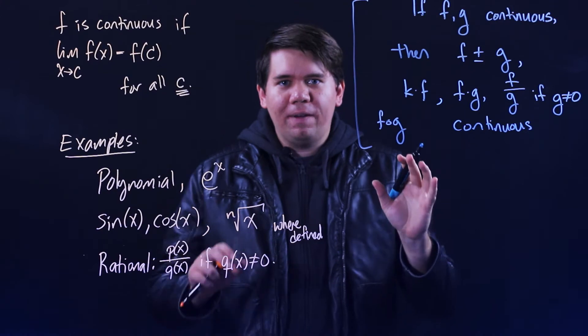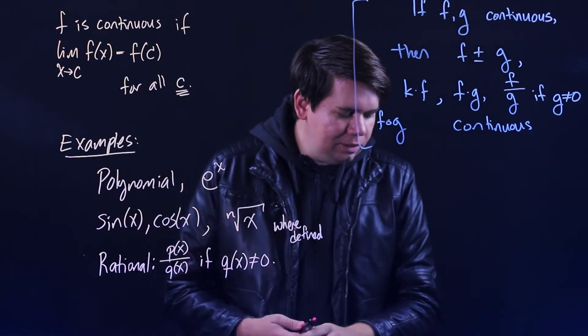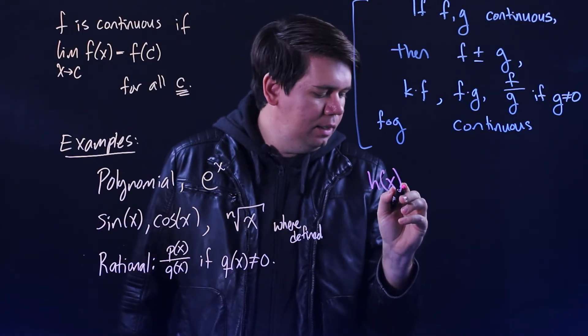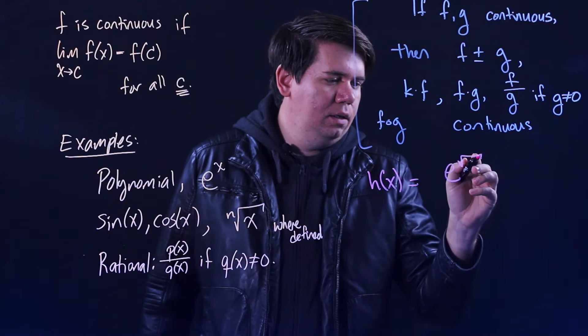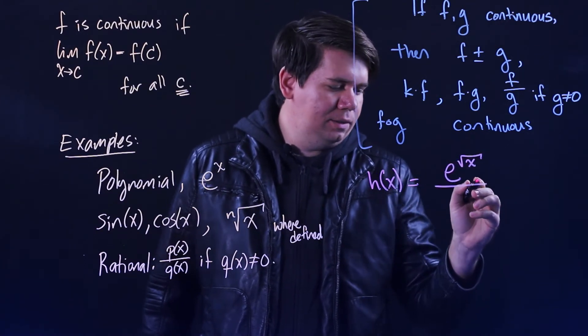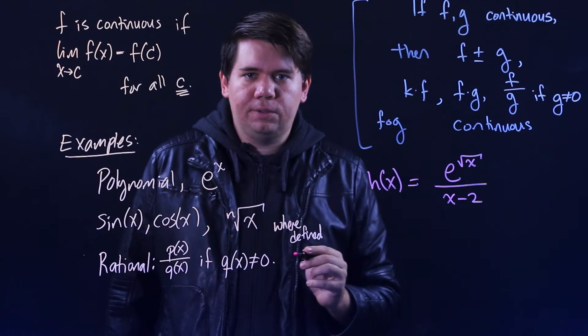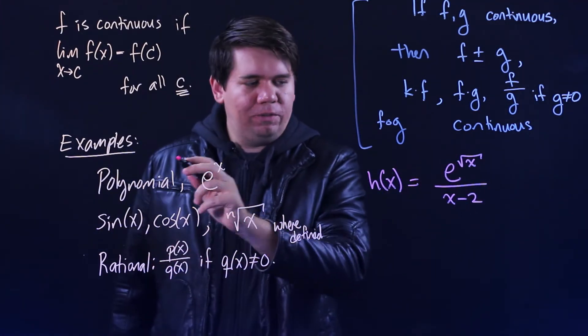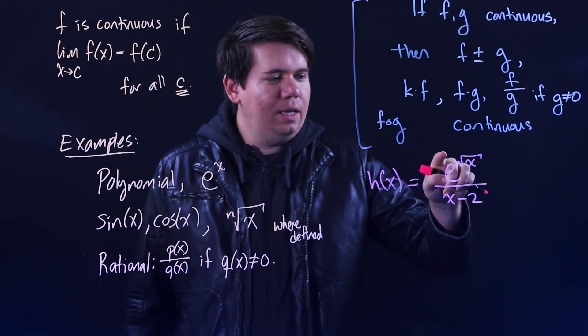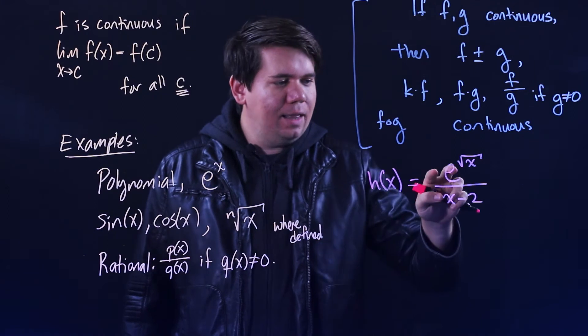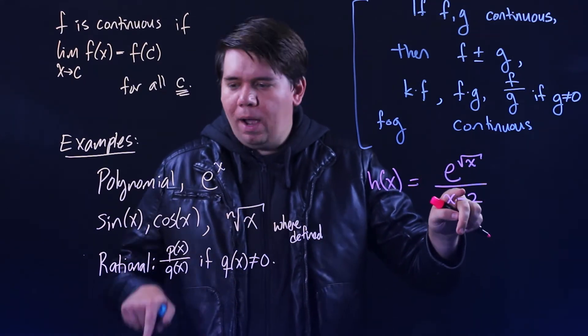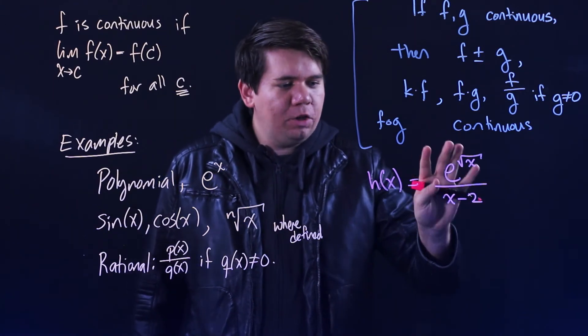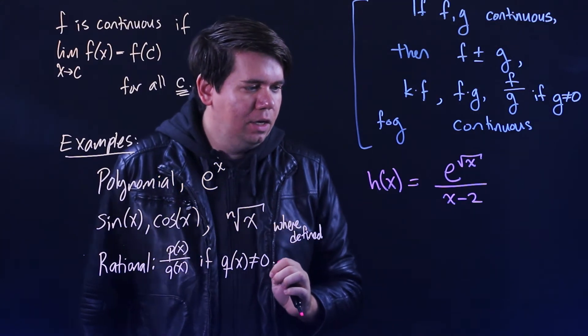So let's look at an example of how this plays out in action. Let's consider a function like the function h(x) is equal to e to the square root of x all over x minus 2. And what I want you to notice is this is a combination of these functions we've talked about. It's a composition of e to the x with the square root of x, and then that is being divided by a polynomial x minus 2. And so we can begin to, just by looking at this function, see where it's continuous.